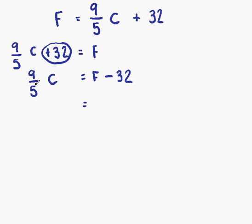What we have on the left-hand side is 9 fifths C. What that actually means is 9 fifths times C. If you think about it, 9 fifths times C is just the same as 9 fifths times C over 1. So 9 times C is 9C, and 5 times 1 is 5 on the bottom. That's equal to F minus 32.